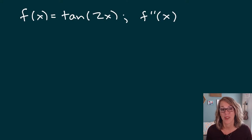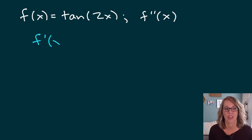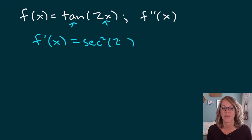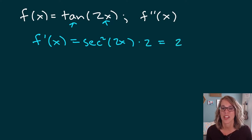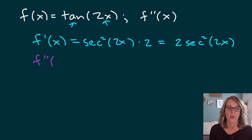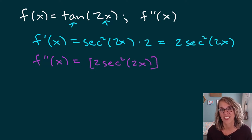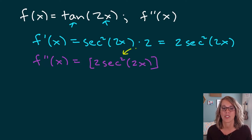We're going to go back to doing a second derivative, this time with a trig function. Applying the first derivative — working towards the second derivative — I do have an outer function and an inner function of 2x. The derivative of tangent, hopefully you've got this one memorized, is secant squared of whatever is on the inside, which is 2x. Following that with the derivative of the inner function, the derivative of 2x is 2, so I rewrite this as 2 secant squared 2x. Now I'm ready for the second derivative. I have secant squared 2x, and there are actually three different layers — the outermost layer is the power 2.